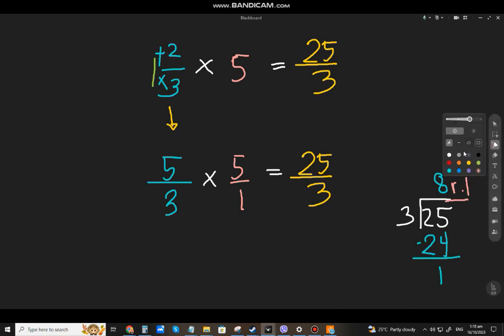So, again, the quotient will be the whole number. The remainder will be the numerator. And the divisor will be the denominator.